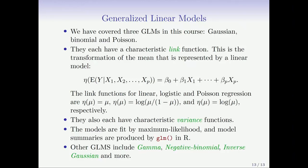Other GLMs not covered here include the negative binomial, which despite its name is used for count data with extra over-dispersion; the inverse Gaussian distribution; and the gamma distribution, which is often used for positive or non-negative observations with long right tails. The GLM family is quite large — we've covered the most important members.